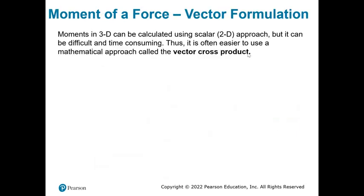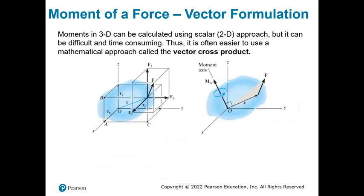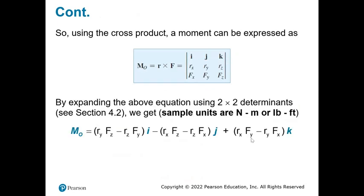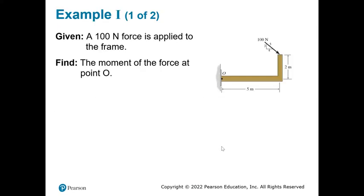For moments in 3D, while a scalar approach can be used, it is difficult and time consuming. Instead, we use the cross product. We obtain the position vector r from the origin to the point of force application, then compute the moment as r cross F using the determinant format with i, j, k in the first row, position vector components in the second, and force components in the third.